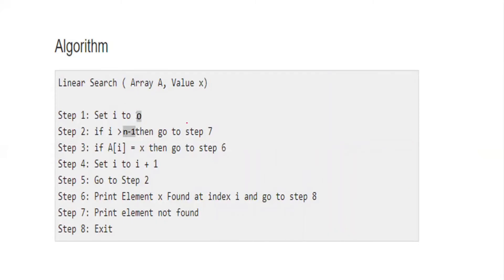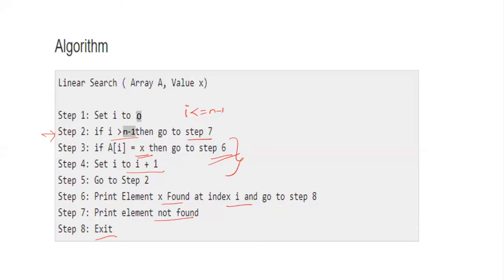The linear search algorithm condition is: if i is less than or equal to N minus 1, we move to the next step. This process repeats, going back to step two, until a match is found or the condition is violated.